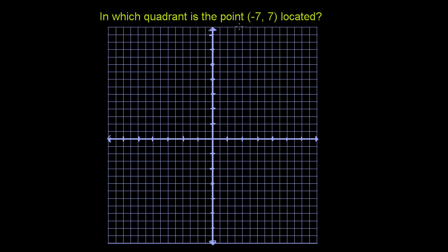In which quadrant is the point located? So let's just review what a quadrant is. A quadrant is each of the four sections of the coordinate plane. And when we talk about the sections, we're talking about the sections as divided by the coordinate axes.